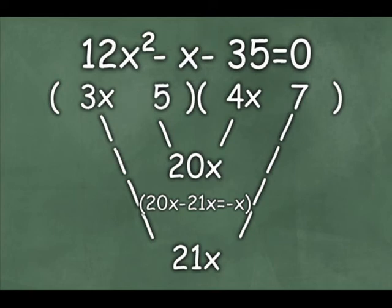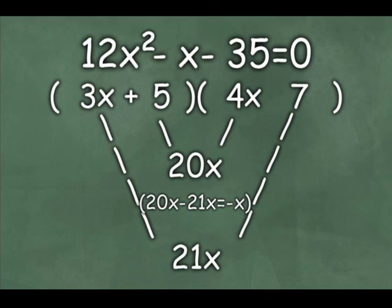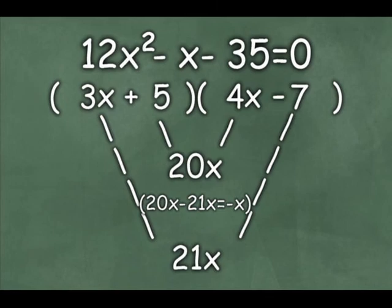So this is where we change the signs, where those placeholders, that plus or minus sign was a placeholder. How can I manipulate those signs to get a positive 20x and a negative 21x? And that'll happen when the 5 is positive, that way 5 times 4x would be a positive 20. And if the 7 were negative, that way 3 times negative 7 would be a negative 21.